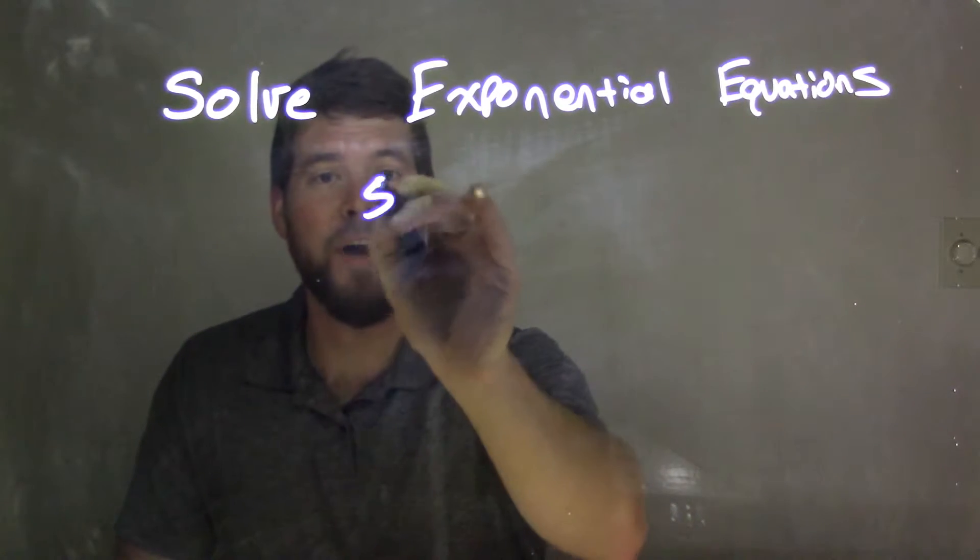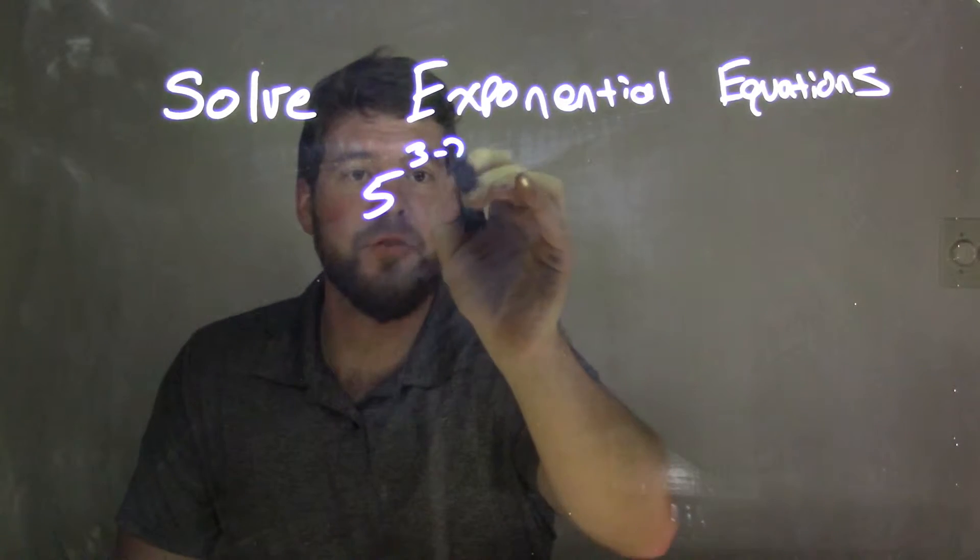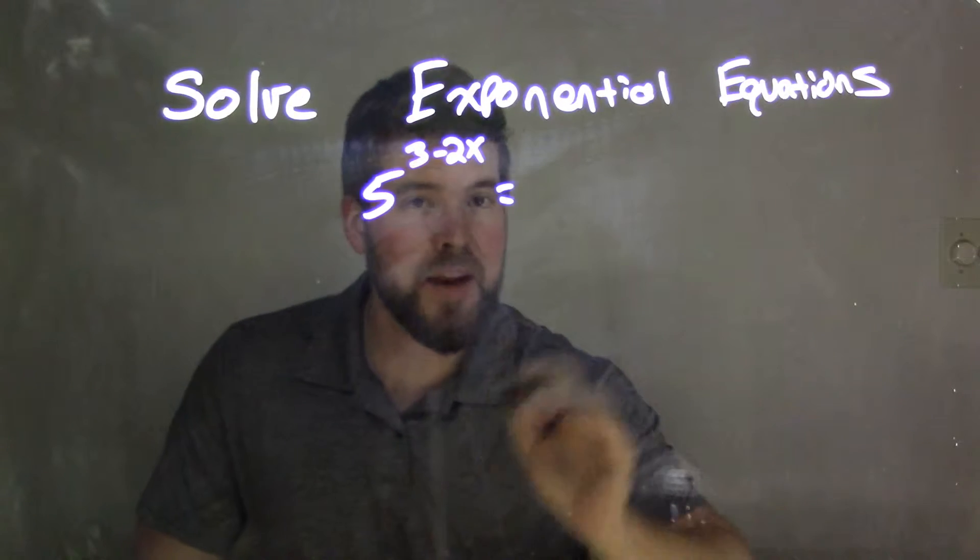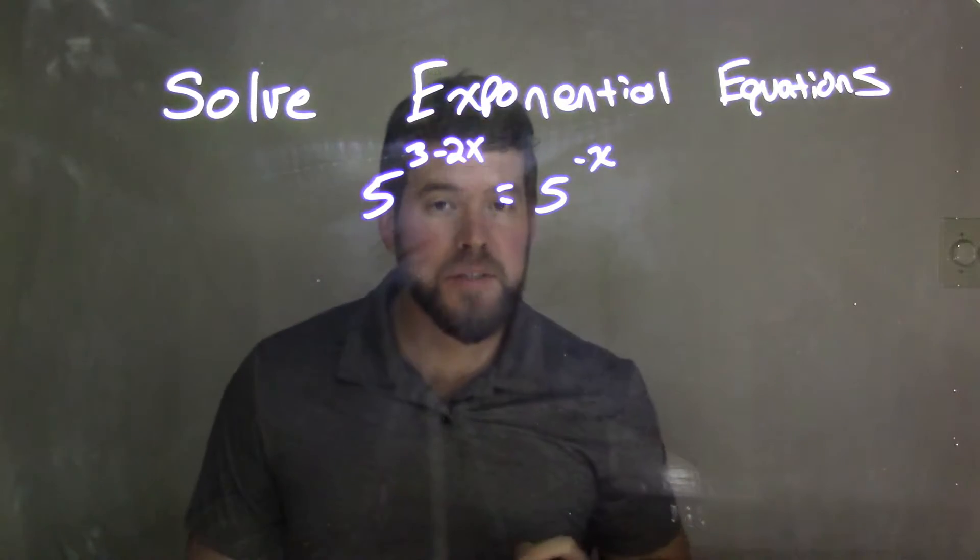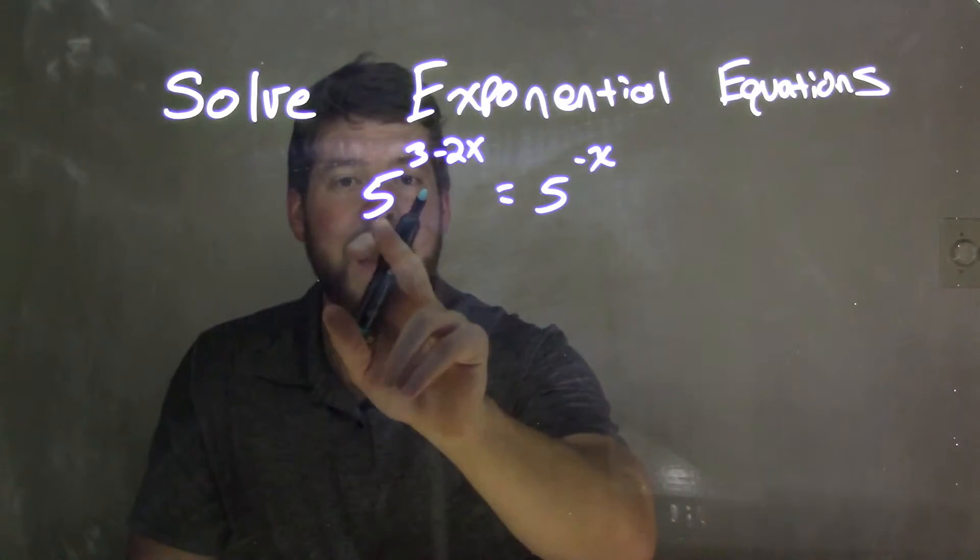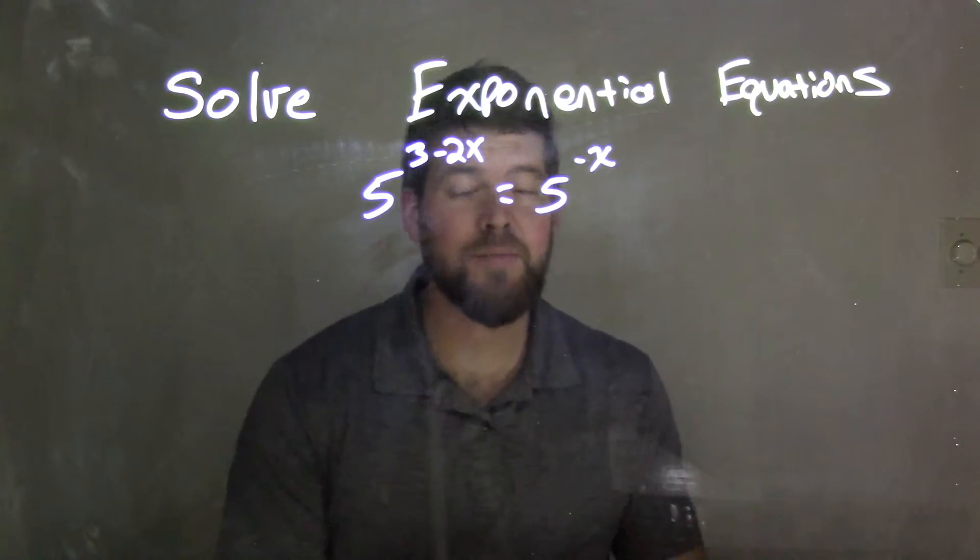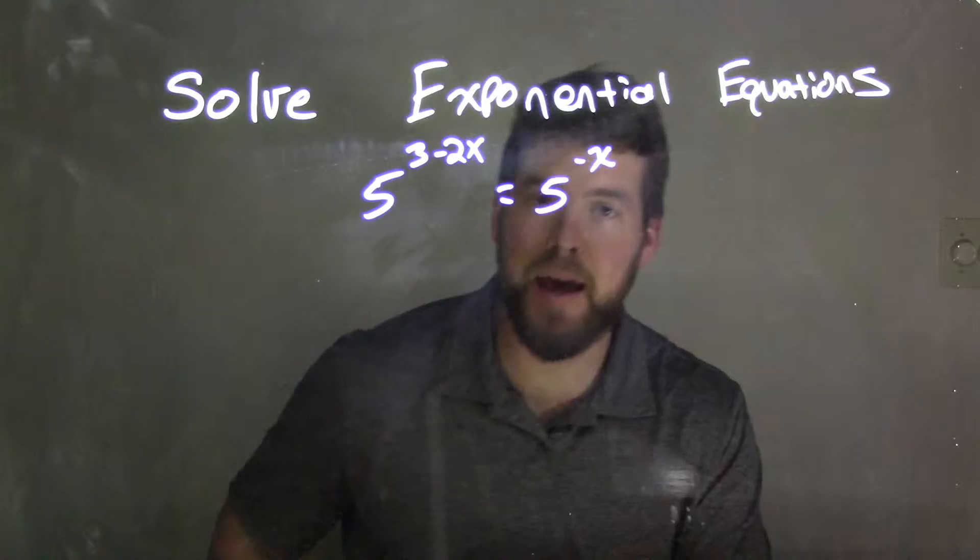Our first equation is 5 to the 3 minus 2x power, and we're setting that equal to 5 to the negative x. Now the first thing we should notice is that we have the same base on both sides, but we have two different exponents.